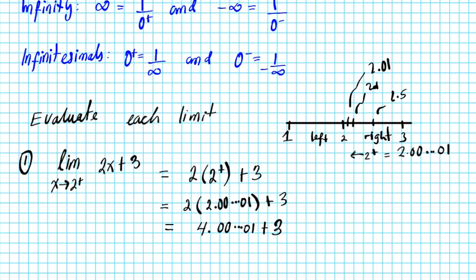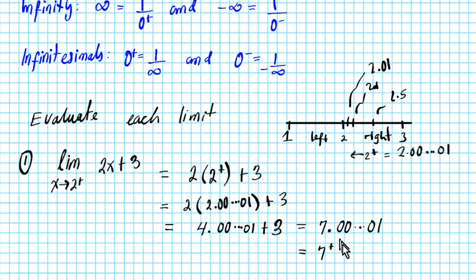When you add 4 from the right to 3, you get 7.000...01, which is 7 from the right. For limits, the question is: what number are you approaching? When approaching 7 from the right, you are approaching 7. So the answer to question number one is 7.